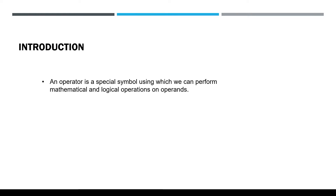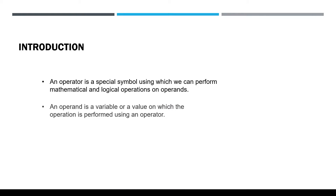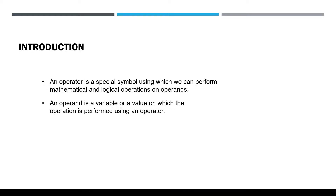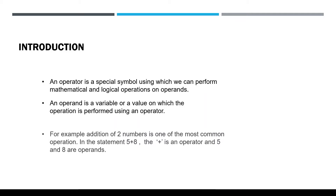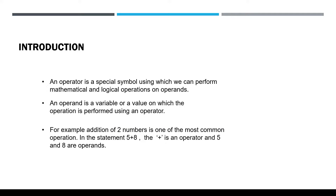An operator is a special symbol using which we can perform mathematical and logical operations on operands. An operand is a variable or a value on which the operation is performed using an operator. For example, addition of two numbers is one of the most common operations. In the statement 5 plus 8, the plus is an operator and 5 and 8 are operands.